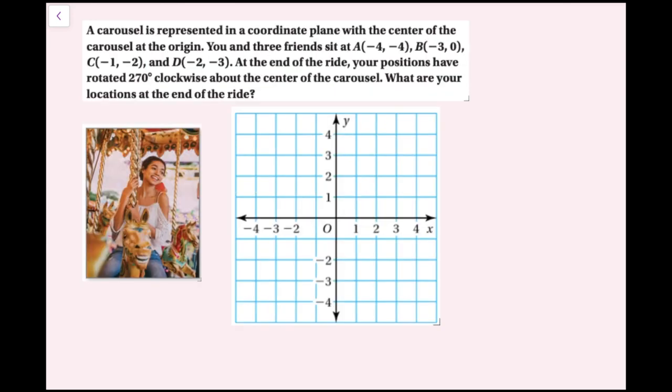For example four: a carousel is represented in a coordinate plane with the center at the origin. You and three friends sit at A(−4, −4), B(−3, 0), C(−1, −2), and D(−2, −3). At the end of the ride, your positions have rotated 270 degrees clockwise about the origin. What are your locations at the end of the ride?